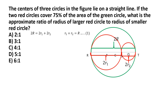We are also given that the two red circles together cover 75 percent of the area of the green circle. The combined area of the two red circles is π·R1² + π·R2², and this equals three-quarters of the green circle's area, π·R². Cancelling π from both sides gives us R1² + R2² = (3/4)·R².